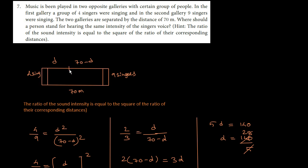First, you need to know the distance. In the first gallery, the distance from the person is d. In the second gallery, the distance from the person is 70 minus d, since the total distance between the two galleries is 70 meters.